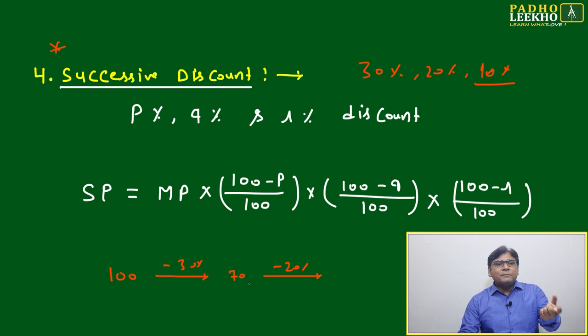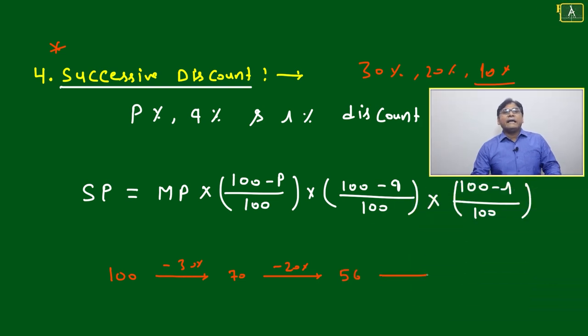It will become only 14 rupees, which you subtract to get 56. Again, you subtract 10% of this, which is around 5.6.